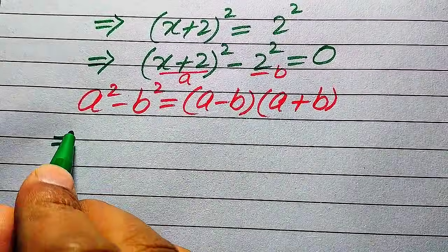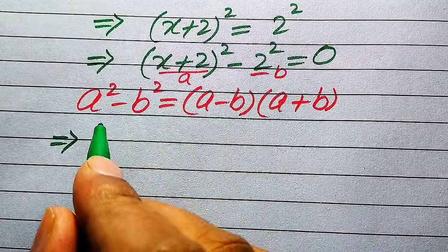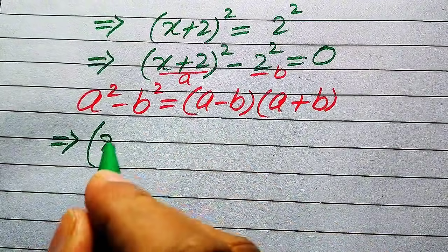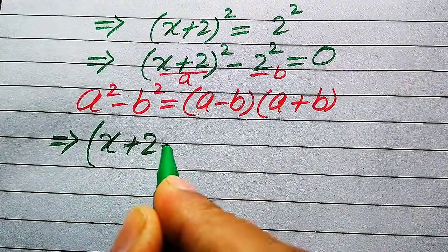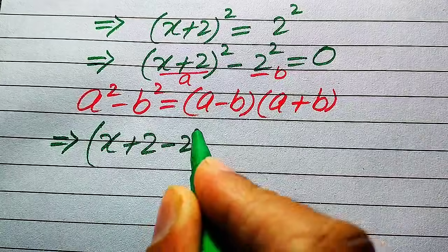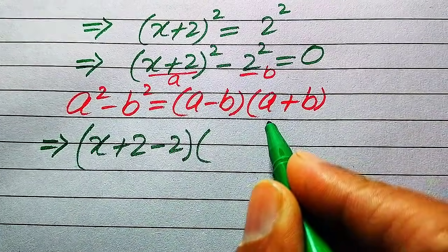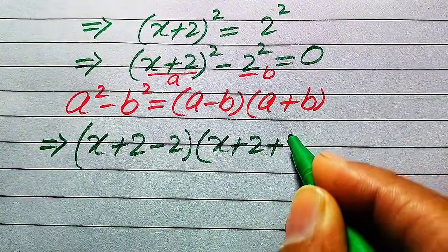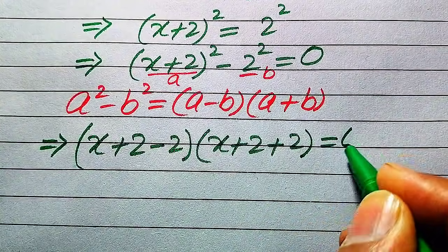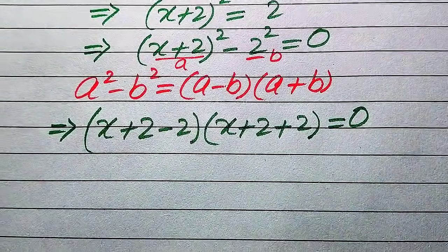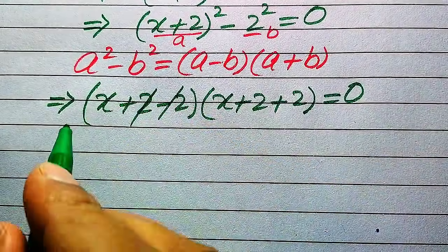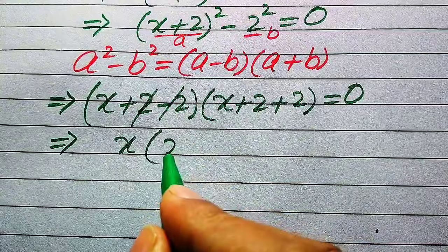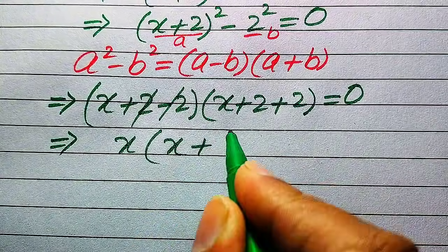After applying this formula, we write the equation as (a minus b)(a plus b) equals 0, where a is (x + 2) and b is 2. So we get [(x + 2) − 2][(x + 2) + 2] = 0. The negative and positive 2 terms cancel, giving us x times (x + 4) = 0.